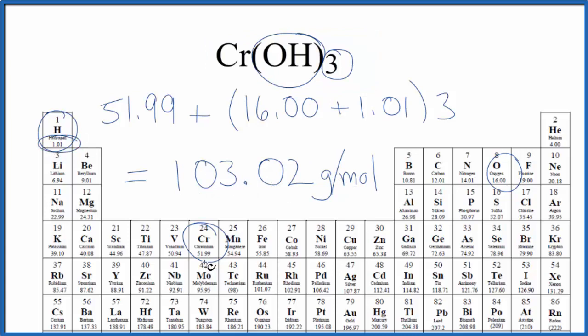Note that in my periodic table, it goes out to two decimal places. If yours goes out more or less, you might have a slightly different answer out here. This is Dr. B with the molar mass for chromium-3 hydroxide. Thanks for watching.